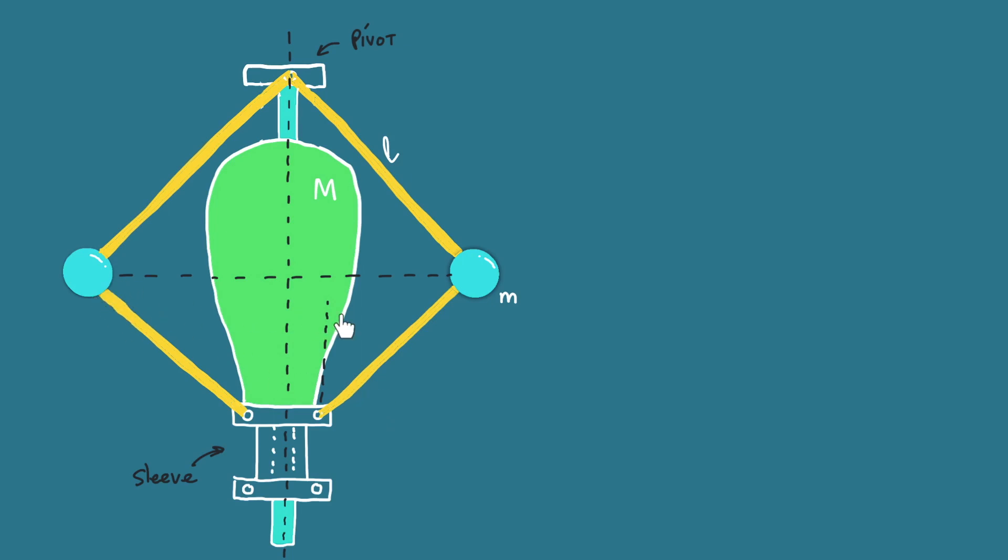It has two rotation balls. It has a sleeve that can move through a shaft. But now it has the central load mass which provides additional gravitational force to the system.